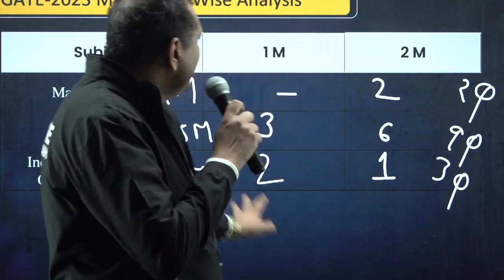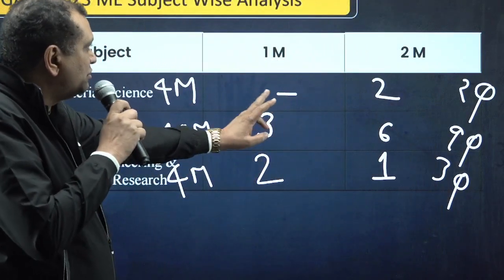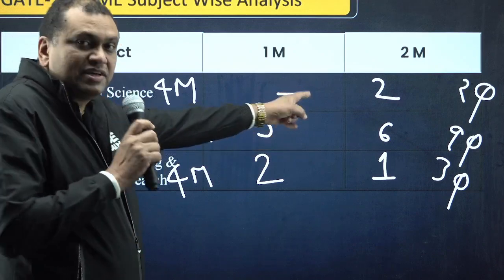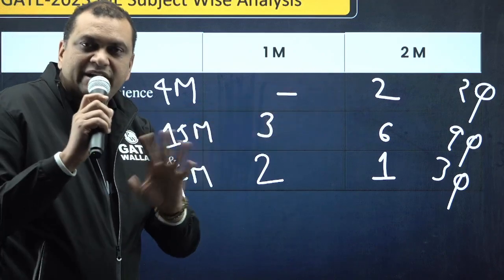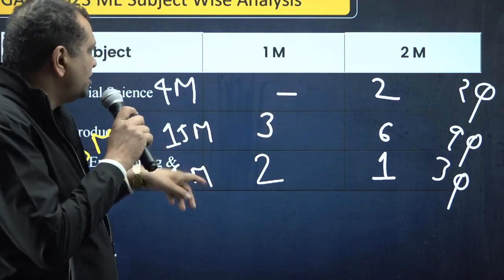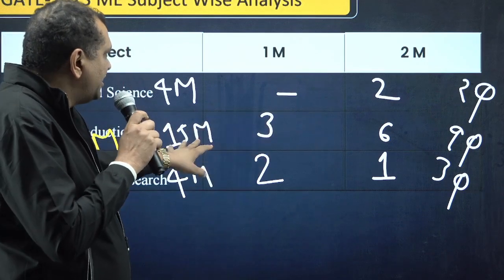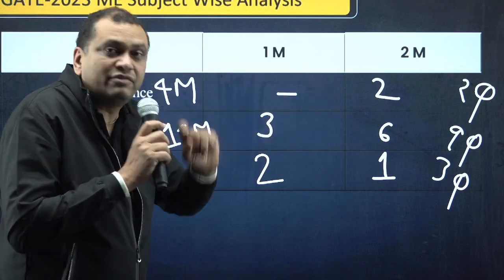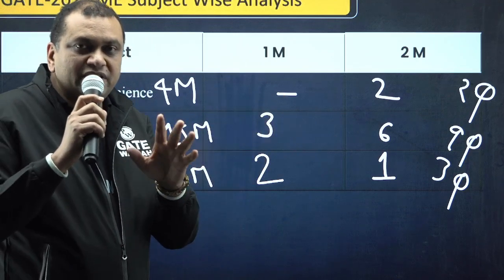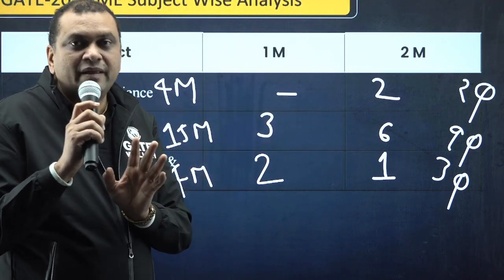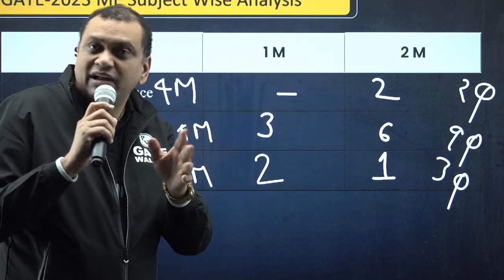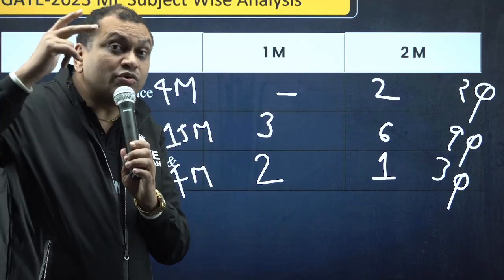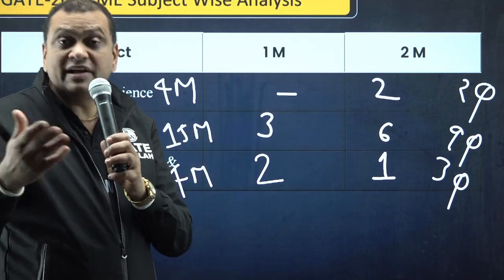This year, material science had 2 questions, two marks each, both were basically NAT type. Production had 9 questions of 15 marks: 3 one-mark questions and 6 questions of two marks. For production, it was tougher compared to last year. For example, two questions were very lengthy: additive manufacturing and one question on coordinate measuring machine.